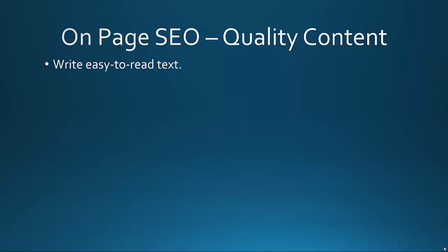You want to write easy-to-read text on your website — content that's easy to digest and easy for people to follow. Avoid spelling and grammar mistakes. Spelling does count when it comes to Google, because they know if you have poorly written content, it's not going to be a win for them to serve that up to their users. They want to serve only the highest quality content. Factors like high bounce rates — people leaving your page quickly — will hurt you ultimately, because people want to read quality content.